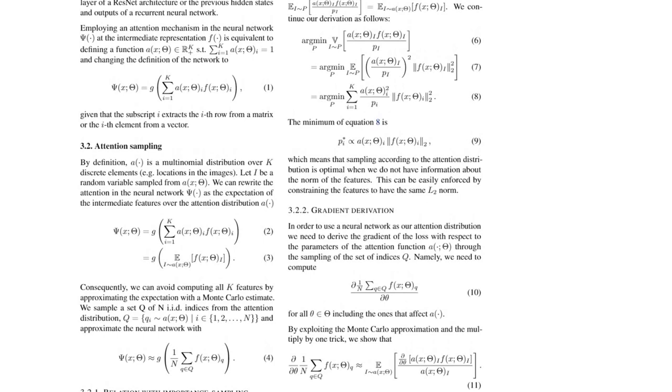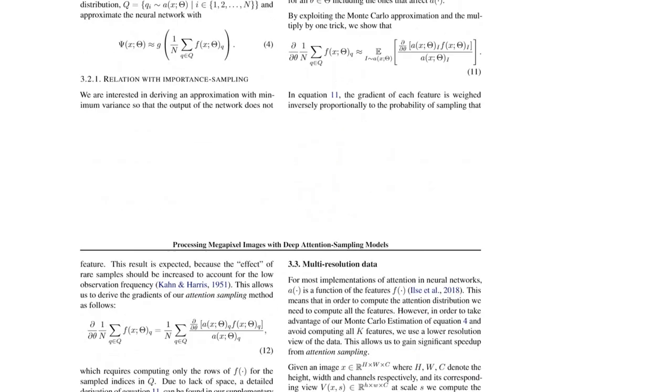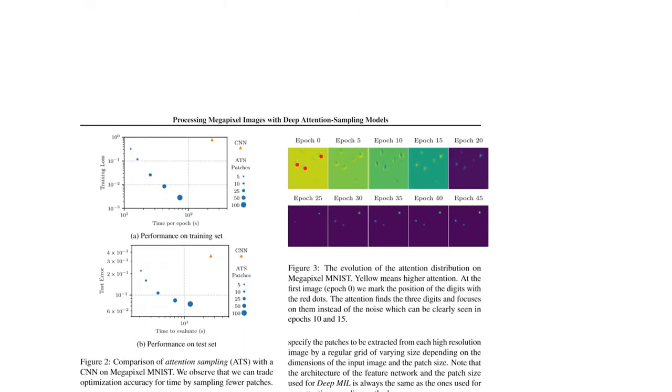They also show how to derive the gradient update when you train with this attention sampling. So now you train your machine learning system not on the whole image but only on a subset of the image patches, but it still behaves in expectation as if you were to train on the entire image. So pretty neat.